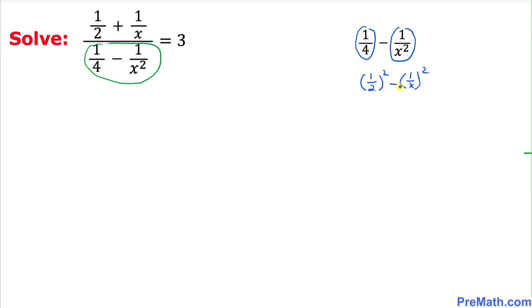Now this represents the difference of two squares, so therefore we are going to be using this fact: a^2 - b^2 could be written as (a - b)(a + b). In our case this is our a and this is our b. We can factor this one out as (1/2 - 1/x)(1/2 + 1/x).